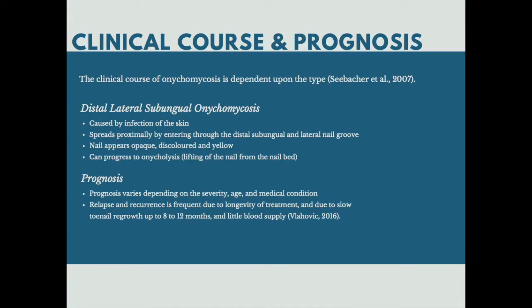The clinical course of onychomycosis is dependent upon the type. For example, if a patient has distal lateral subungal onychomycosis, the clinical course of infection starts at the skin which then spreads proximally by entering through the distal subungal and lateral nail groove. The nail then appears opaque, discoloured and yellow as the infection progresses, which can then eventually lead to onycholysis — lifting of the nail from the nail bed.